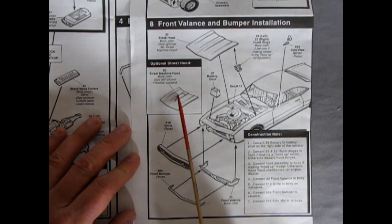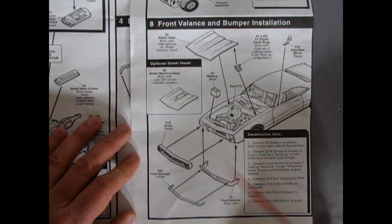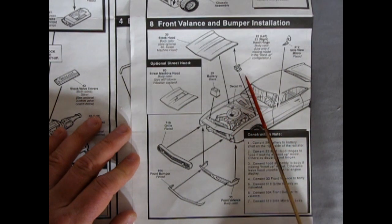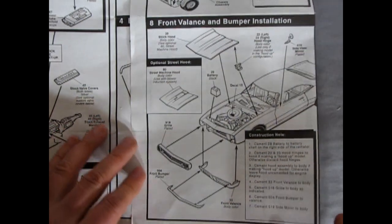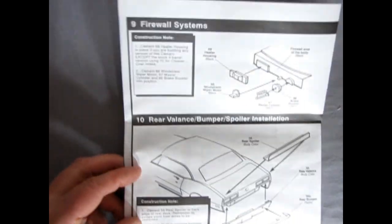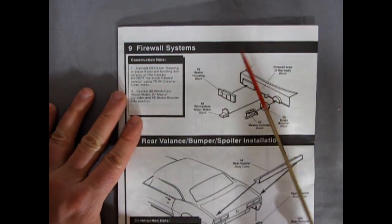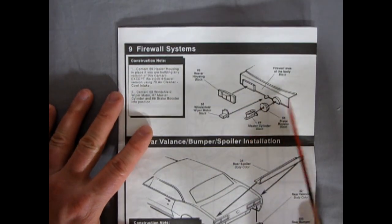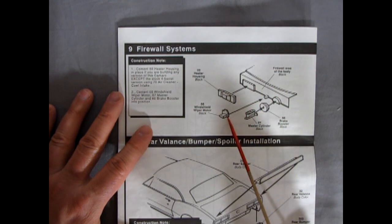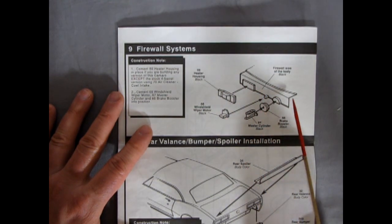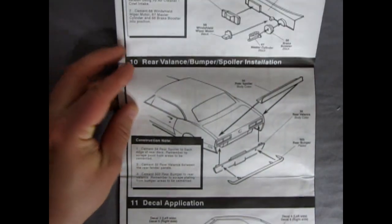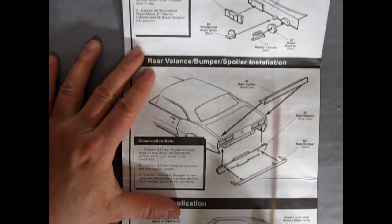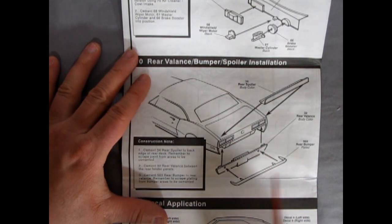We also have a street machine hood with the pre-cut notch in there for your blower to pop through. Your grill, your front valence, and the front chrome bumper, as well as the battery hood hinges, and a side view mirror. And then here we've got our firewall. This is very basic. There's a heater housing, windshield wiper motor, your master cylinder, and the brake booster sitting on there. And then here we have our rear spoiler going on, our rear valence, and the rear bumper.